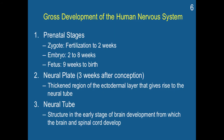Here is the basic gross development of the human nervous system. We have prenatal stages: the zygote, from fertilization to two weeks; the embryo, from two to eight weeks; and the fetus, from nine weeks to birth. The neural plate is a thickened region of the ectodermal layer that gives rise to the neural tube, and this starts to develop three weeks after conception. The neural tube is a structure in the early stage of brain development from which the brain and spinal cord develop — so the neural plate becomes the neural tube, and the neural tube becomes the brain and spinal cord.